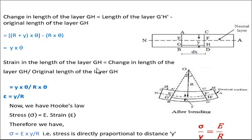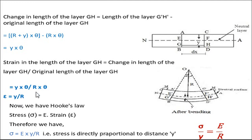Now we find the strain in layer GH. Strain equals change in length divided by original length — a formula from our earlier study of stresses and strains. Change in length is y*theta and original length is R*theta, so strain epsilon equals y*theta divided by R*theta. Theta cancels, giving epsilon equals y divided by R. This expression comes purely from the geometry of the figure.